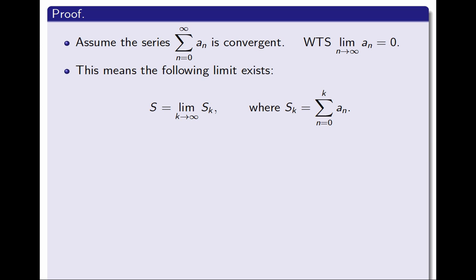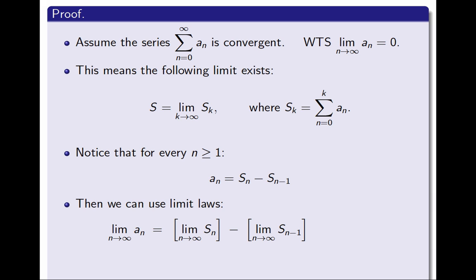I can also buy the a's in terms of the S's, instead of the S's in terms of the a's. And I can say that a_n is S_n minus S_n minus 1, because S_n is the sum up to a_n. S_n minus 1 is the sum up to a_n minus 1, and therefore the difference is simply a_n. And once I have written it this way, I can use the limit laws. And the limit laws will tell me that the limit as n goes to infinity of a_n is the limit as n goes to infinity of S_n minus the limit as n goes to infinity of S_n minus 1.